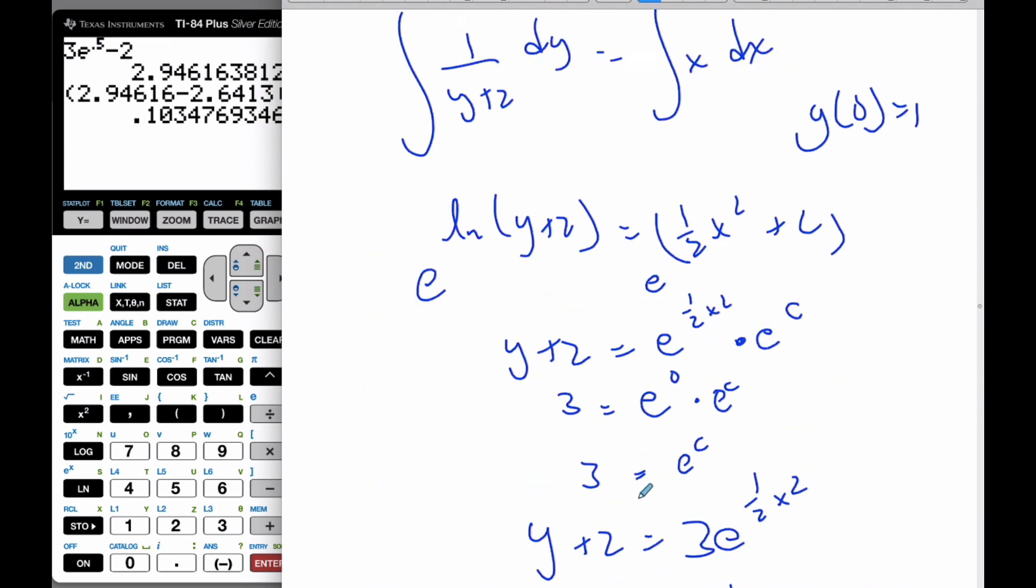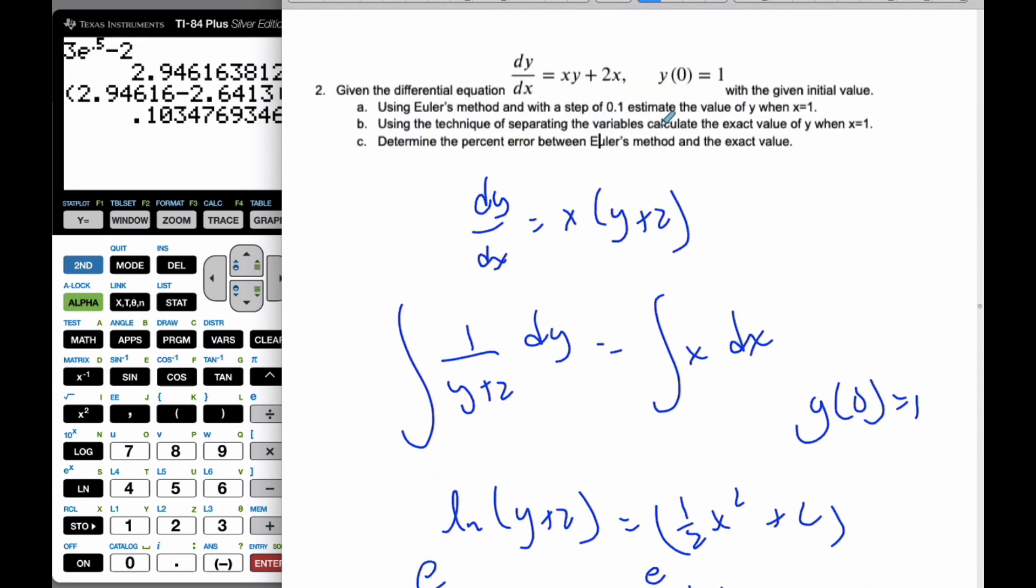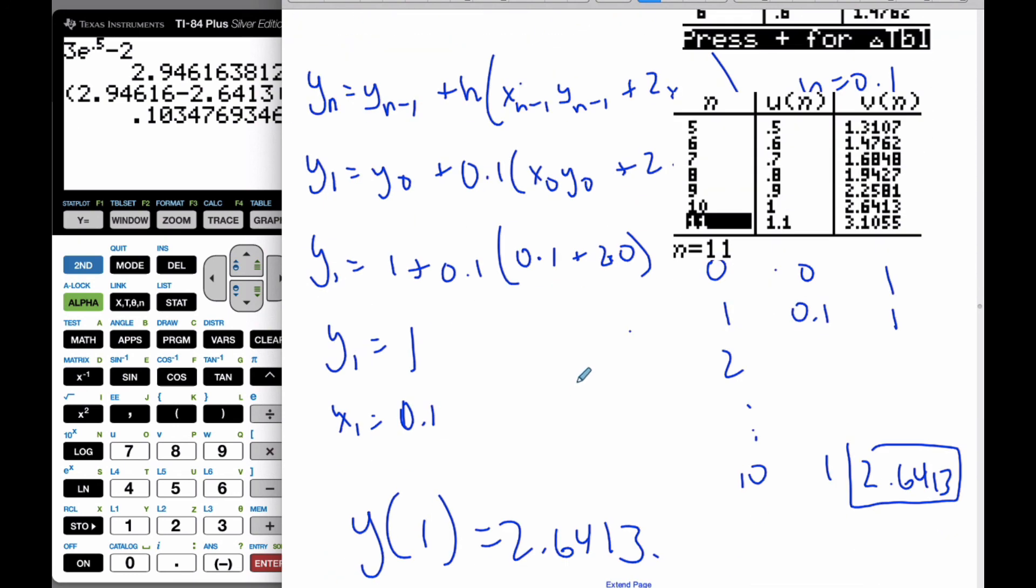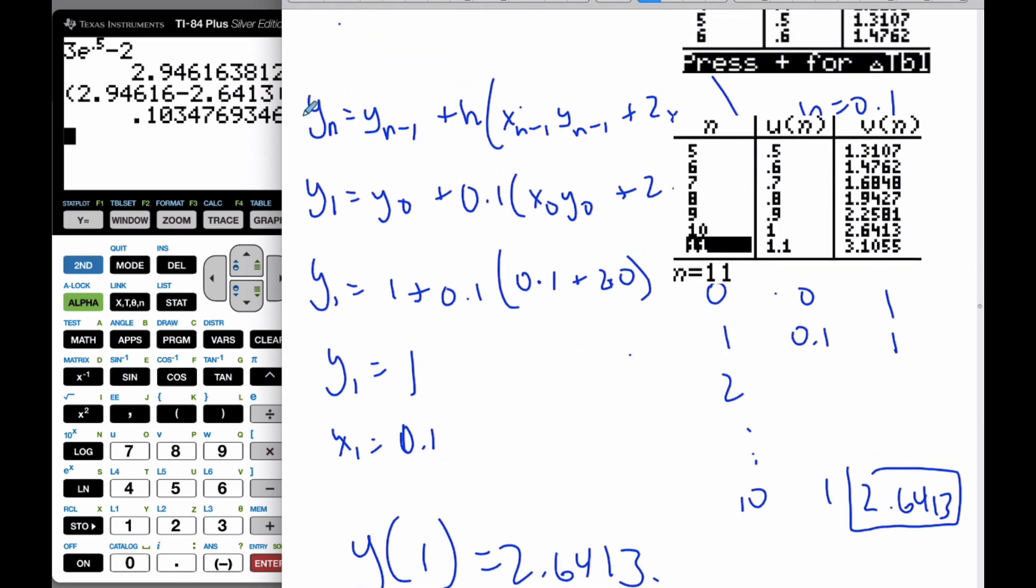So there's how we can do both separable equations or we can use Euler's method with our calculator. Our calculator is what's expected in this class. You have to make sure you can work through all these u's and v's and go through this calculation. You must also show the formula that you used.